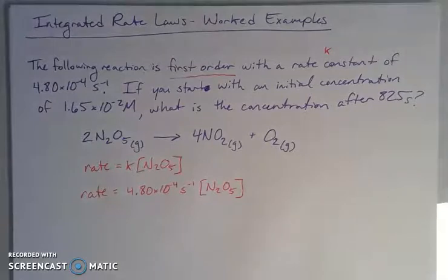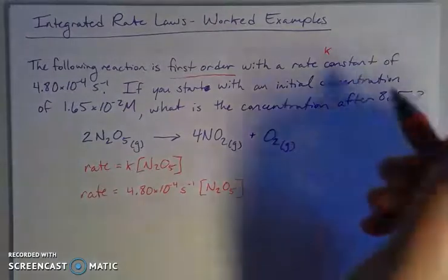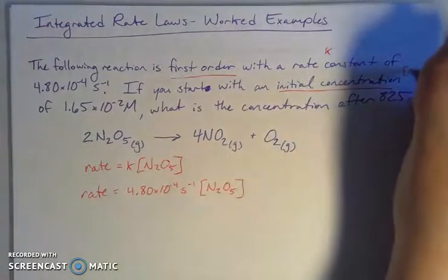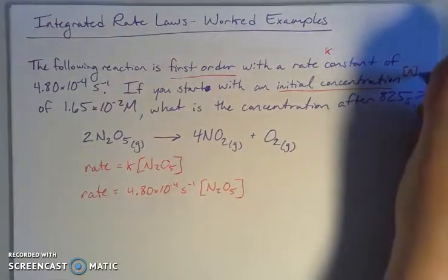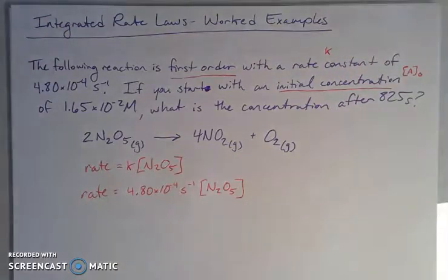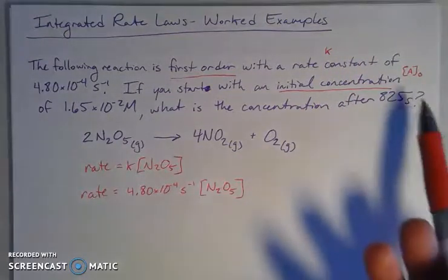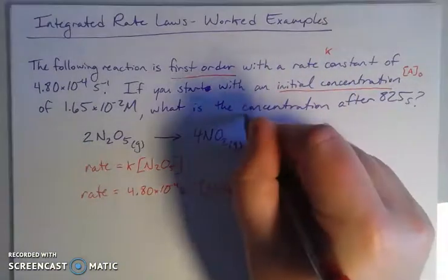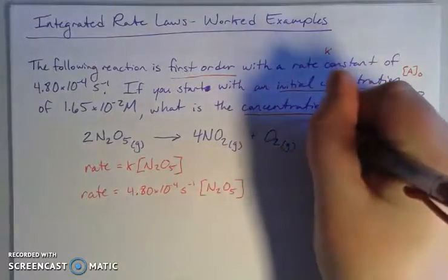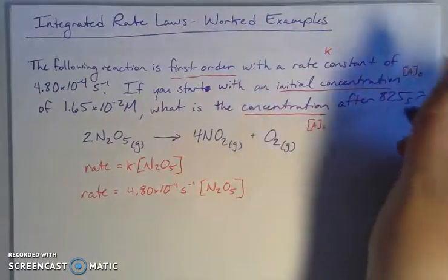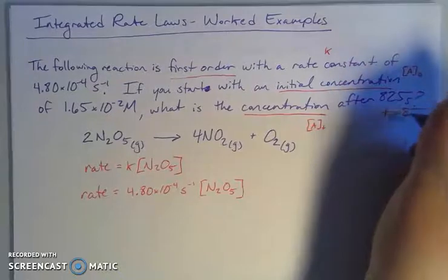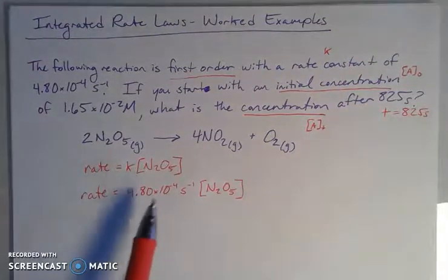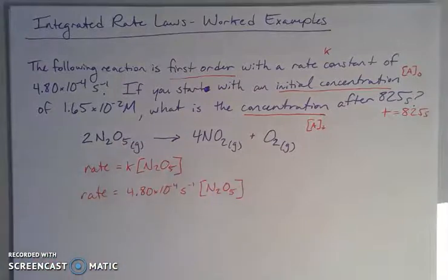It's saying if you start with an initial concentration - the concentration at time 0, or A0 - it's asking for the concentration at time T, and that T equals 825 seconds. I'm given a rate constant, this is my rate law expression.